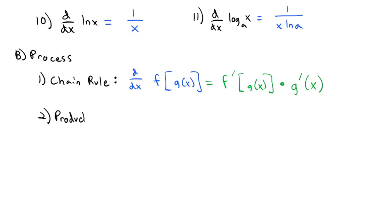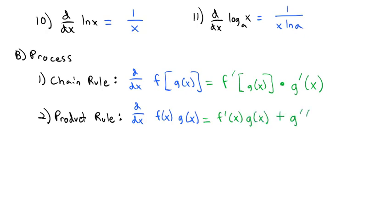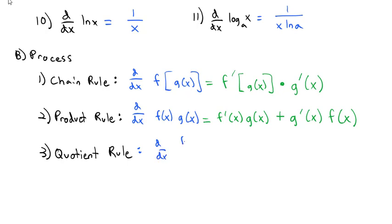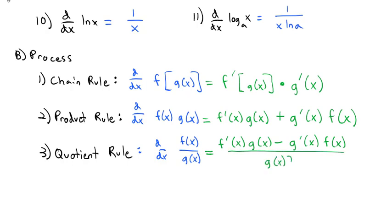Another rule we saw was the product rule. The product rule says if we want to take the derivative of some product of f(x) times g(x), we take the derivative of the first times the second, plus the derivative of the second times the first. Very similar to the product rule was the quotient rule, which says if we want to take the derivative of a quotient f(x) divided by g(x), we take the derivative of the top times the bottom, minus the derivative of the bottom times the top, all over the bottom squared.